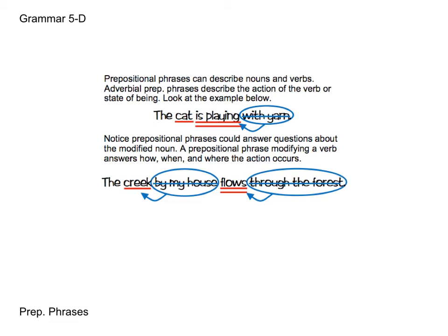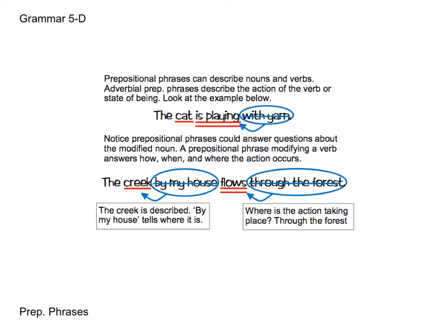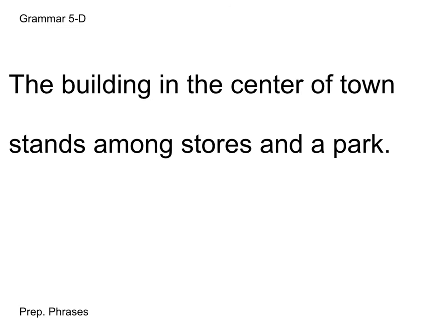So let's look at a sentence with both an adjectival and adverbial phrase: The creek by my house flows through the forest. By my house is modifying creek — it's telling me where the creek is. And flows through the forest is telling us where the action is taking place. Through the forest. So now let's look at one more sentence before we get into our diagramming.